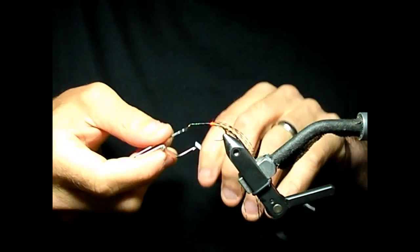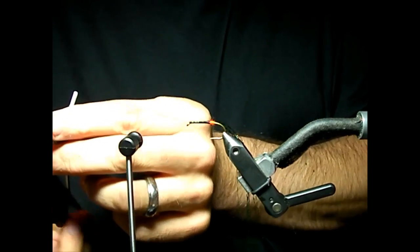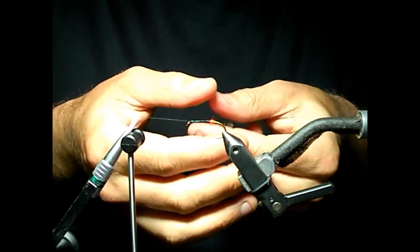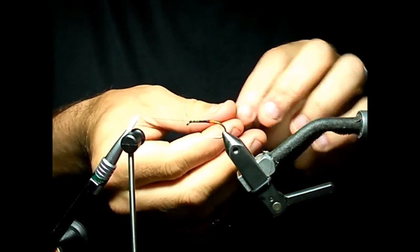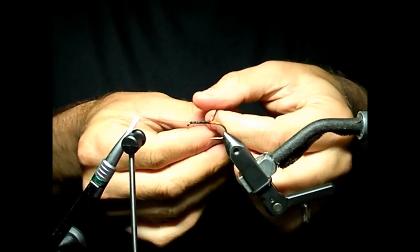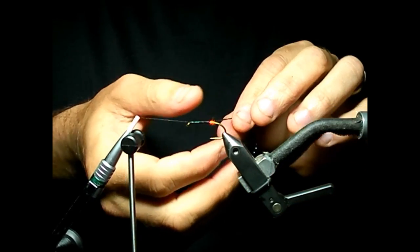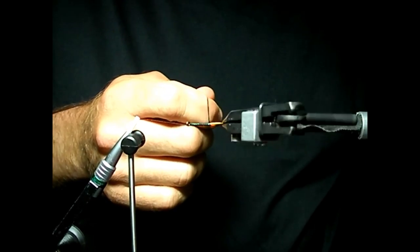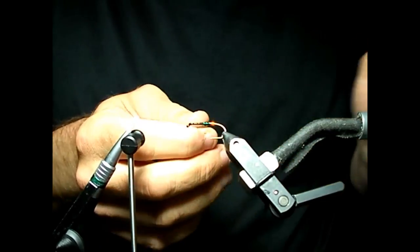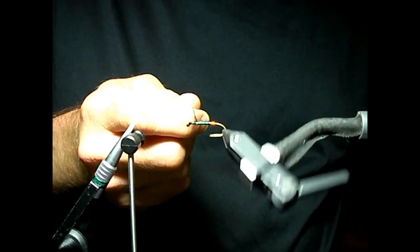Take your whip finish tool, put a couple wraps in there, and swing back the bobbin holder again. Then give your crystal flash a few twists. It's going to want to twist one way quite well and the other way not so much, so turn it clockwise as you're looking at it. Give it five or six twists, then advance it up the fly, stopping to give it a few more twists to make a nice even body.